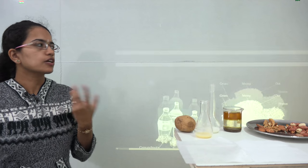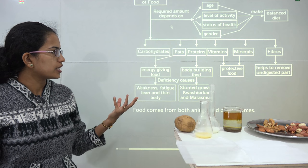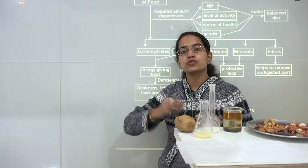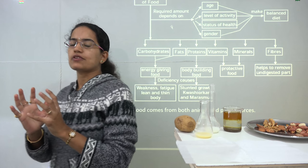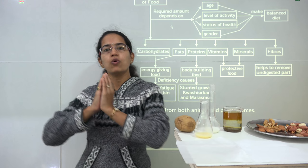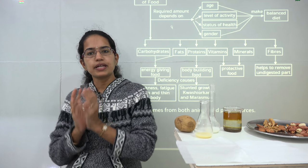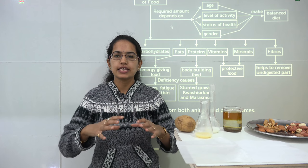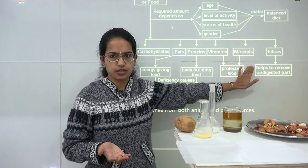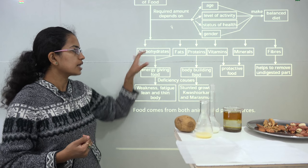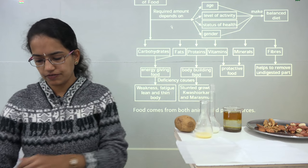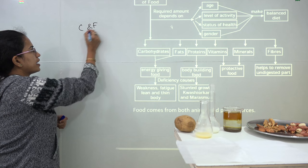When we talk about the composition of what a food product actually includes, food includes various components. If I eat potatoes for the whole day, the only source of energy I would be getting is carbohydrates. To have a healthy body and a balanced diet, we need all the essential things. Our body requires carbohydrates and fats for good functioning — together these are known as energy-giving food.